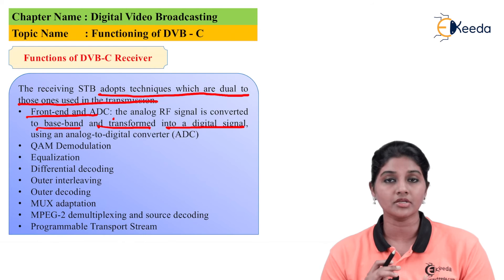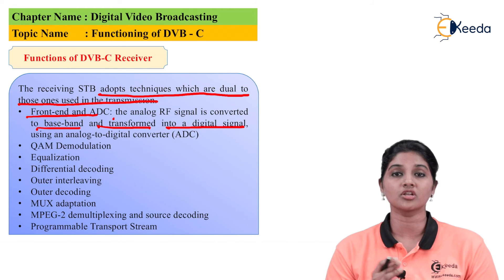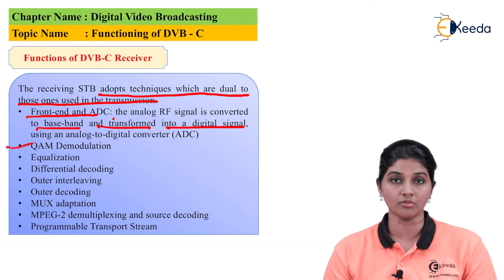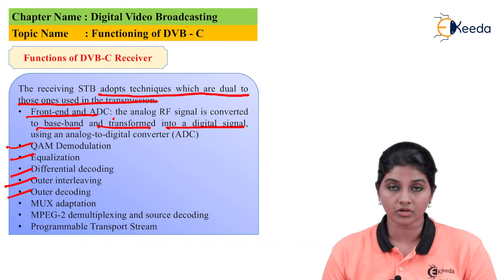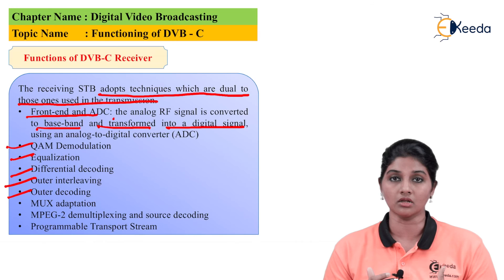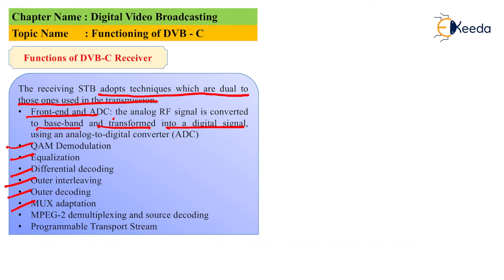After ADC conversion, baseband filtering is applied to the signal. Then QAM demodulation is used, followed by equalization and differential decoding so that the encoded signal is decoded and errors are reduced. After that, outer deinterleaving and outer decoding are used, performing the opposite function of the interleaver and external encoder. Then MUX adaptation performs demultiplexing, followed by MPEG-2 demultiplexing and source decoding, and finally the programmable transport streams are used to obtain the output signal.